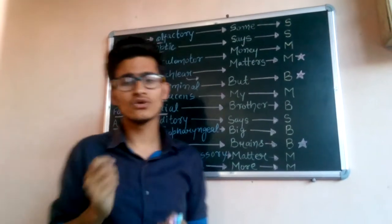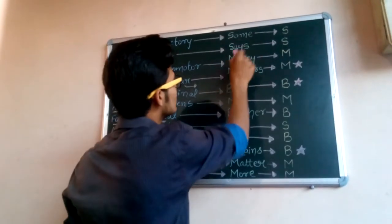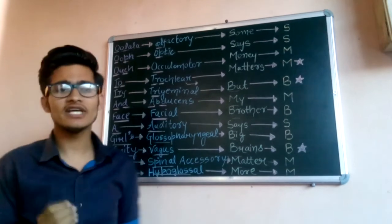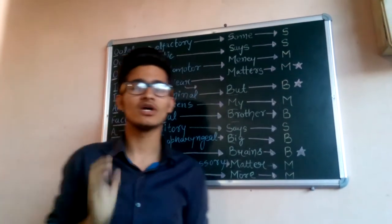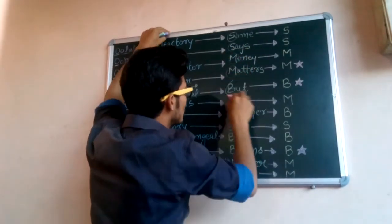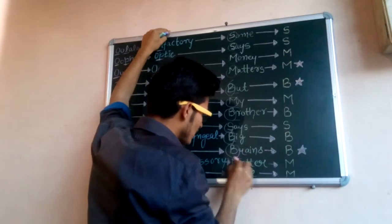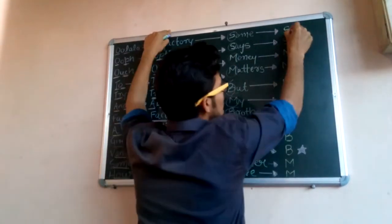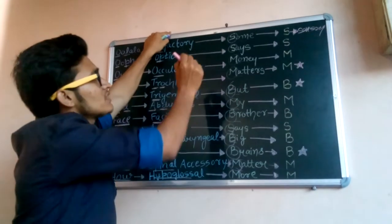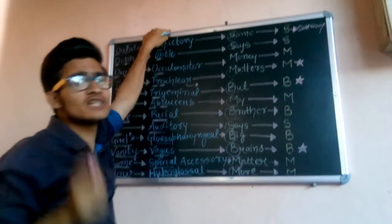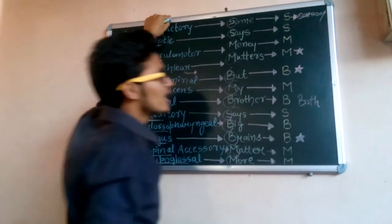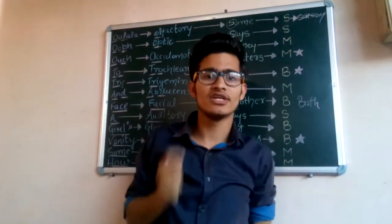After memorizing the names, we need to note the nature of these nerves. For that, there is another mnemonic: 'Some says money matters but my brother says big brains matter more.' We just memorize the starting letters: S, S, M, M, B, M, B, S, B, B, M, M. Here S means sensory, M means motor, and B means both — meaning mixed, both sensory and motor.